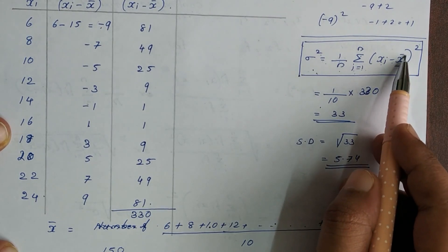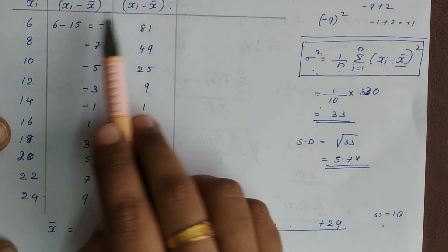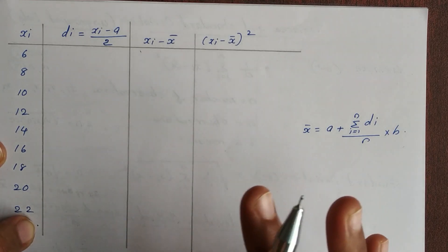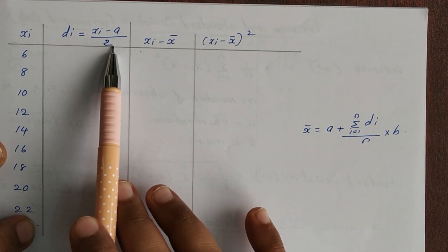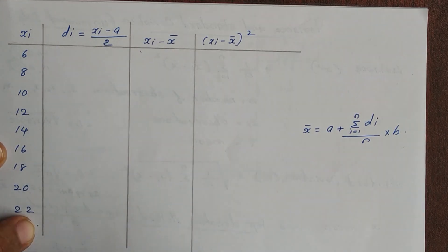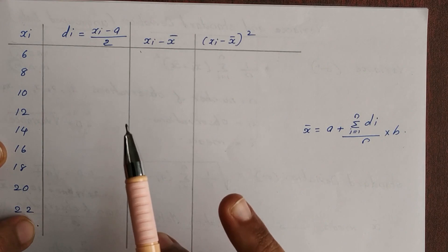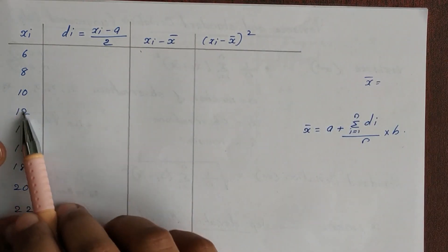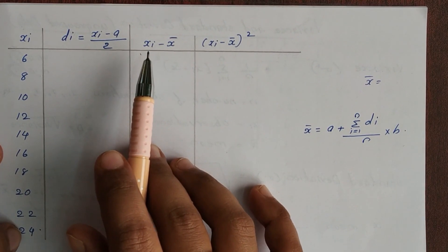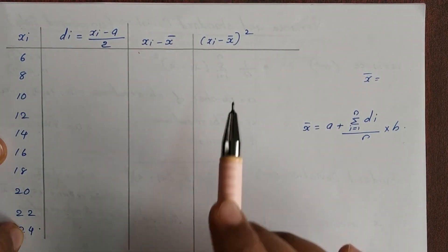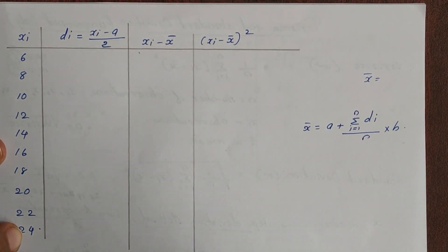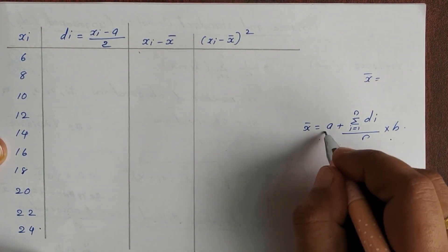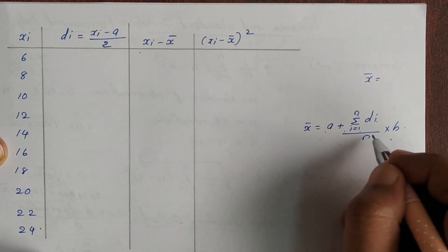The first step is the mean. The second step is xi minus x bar, and the third step is (xi minus x bar) the whole square. For the step deviation method, the mean is found using the formula: x bar equals a plus summation i equals 1 to n of di divided by n, multiplied by h.